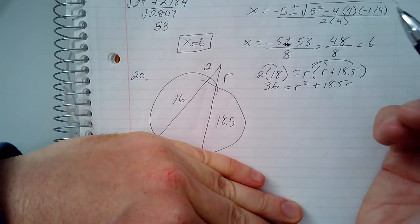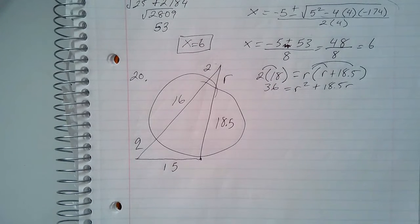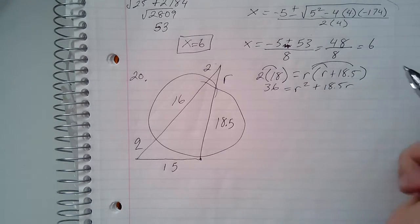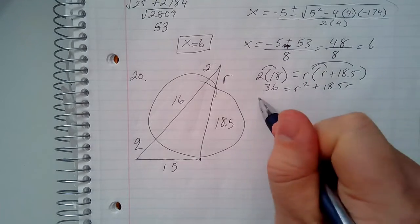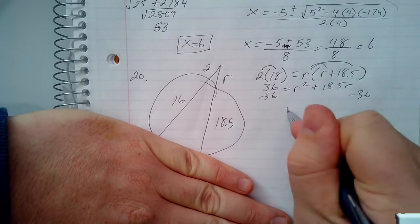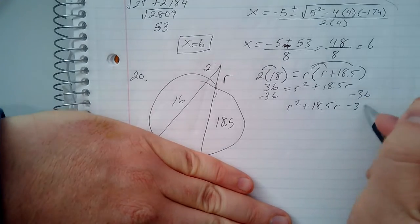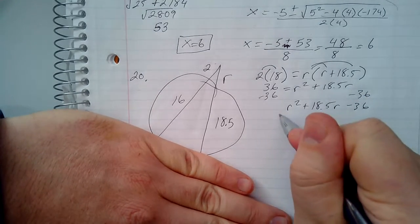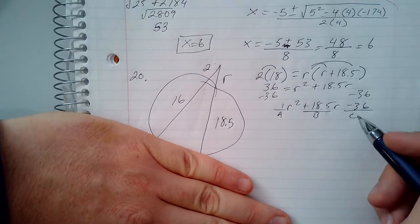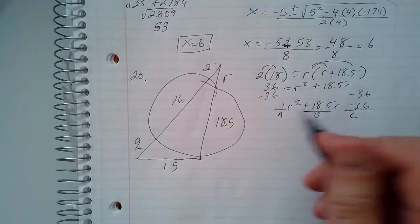We need to set this up for the quadratic formula — I had to look that name up, it's the quadratic formula. Subtracting 36 from both sides gives r squared plus 18.5r minus 36 equals zero. This is my a, which is 1; my b, which is positive 18.5; and my c, which is negative 36.